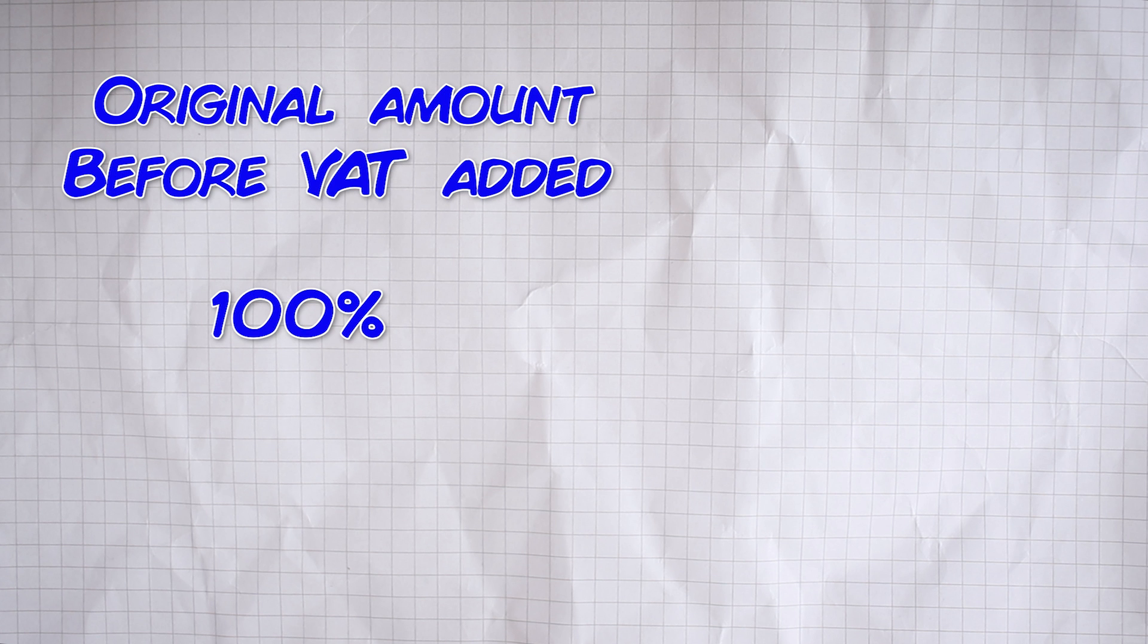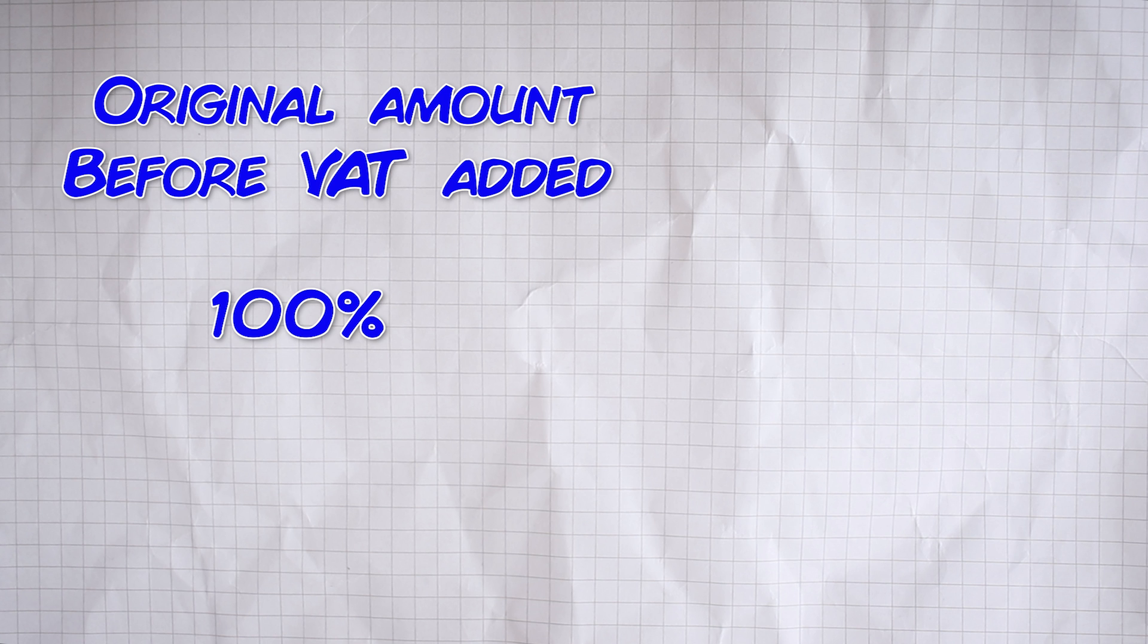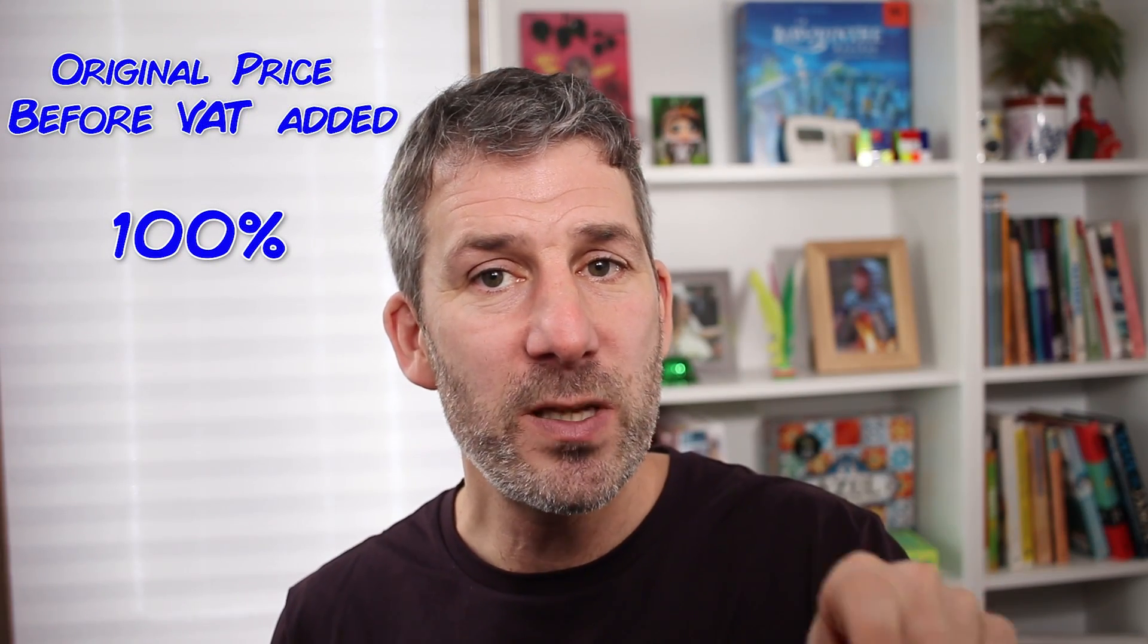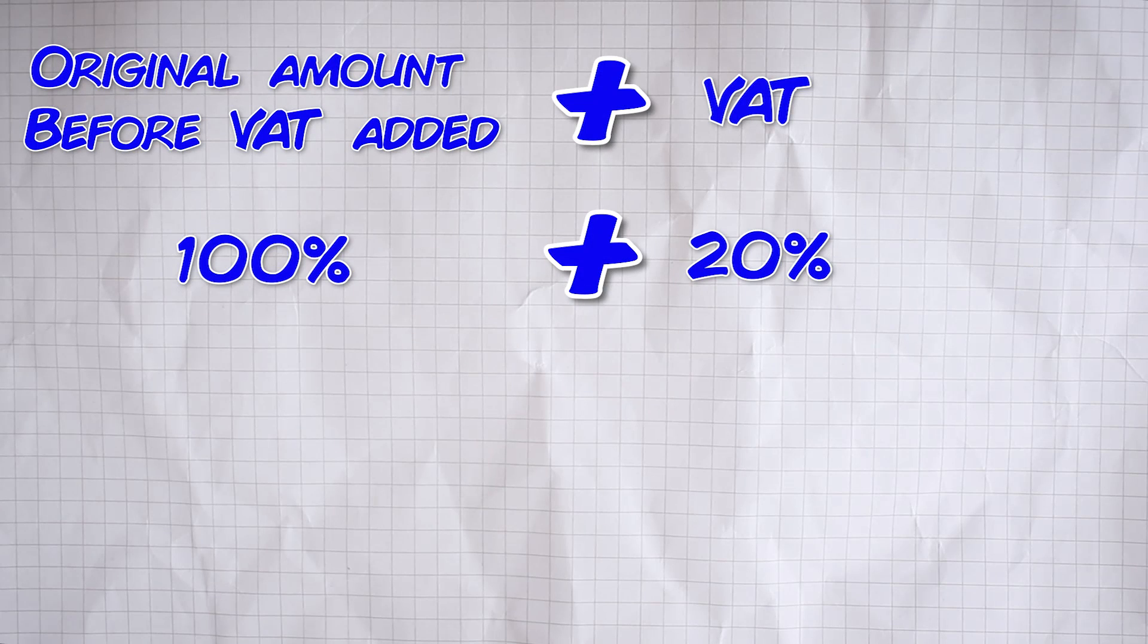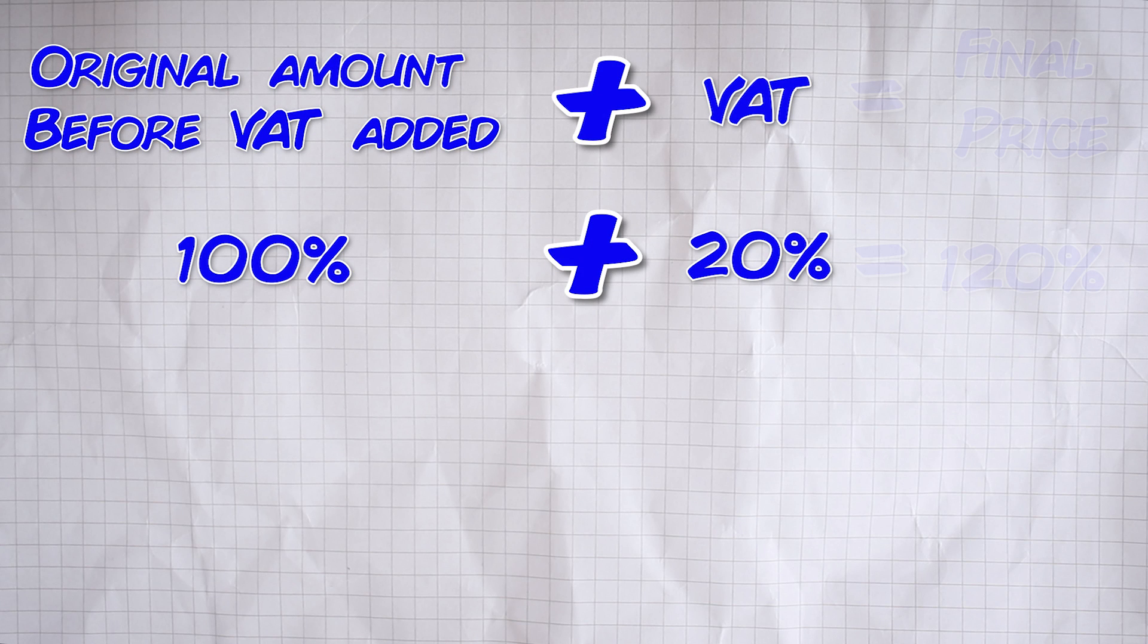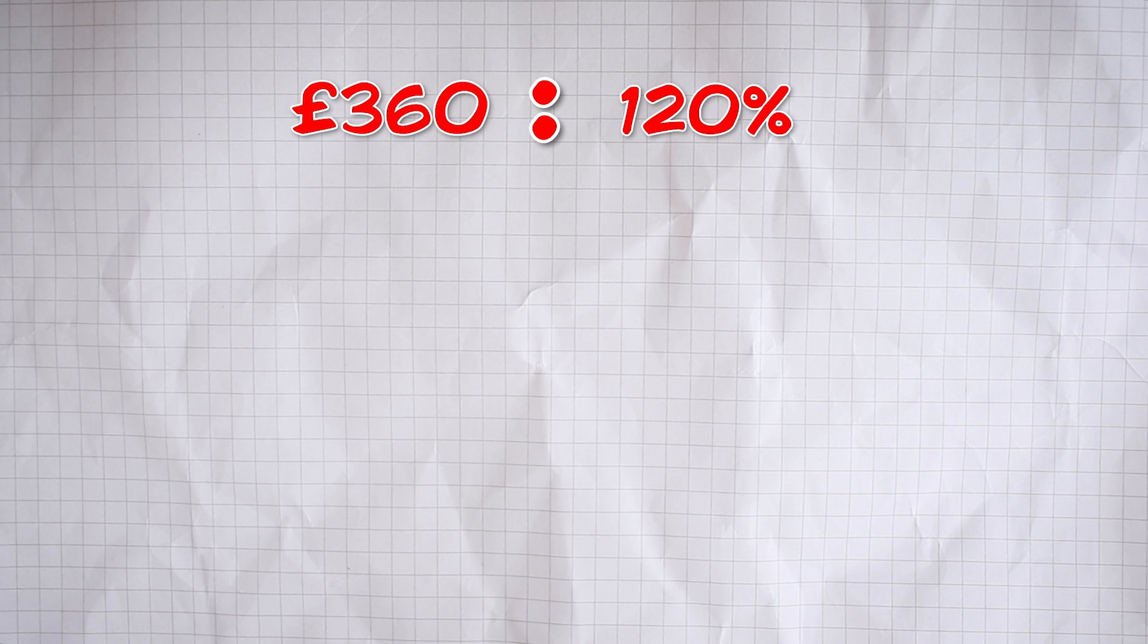With these ones, we need to think of the original amount, that is the price without the VAT, as 100%. Your starting amount is 100%. We've then added VAT at 20%. So, we've had 100% and now we've added 20%. We now have 120%. That means that the price of £360 is equal to 120%. From here, we're just back to using the exact same method, setting those two numbers up in a ratio.